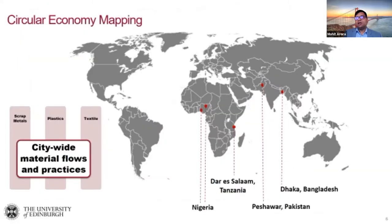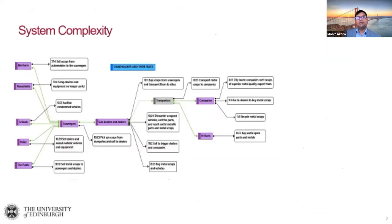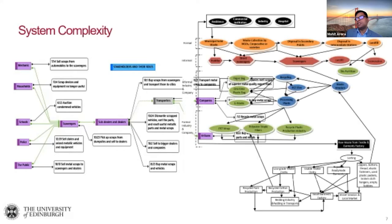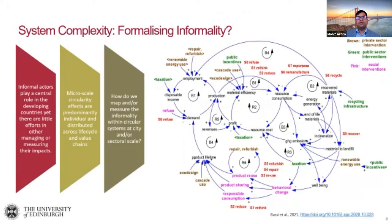We're looking at different cities across five countries, examining scrap metals, plastics, and textiles. For Dhaka city we're looking at city-wide material flows — what engineering and social interactions are taking place, what material flows are associated, and what social capacities are being built through the circular economy process. The system complexity is very clear; just mapping one metal-scrapping exercise within Nigerian regions becomes much more complex at the city level. Most of this is being done by informal actors. The debate has been around formality of circularity, but in developing countries informality comes first.